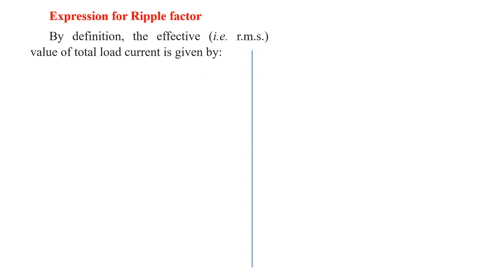We'll derive the expression for ripple factor for both the half wave rectifier and full wave rectifier. By definition, the effective value of total load current — the output current — contains both AC and DC components. The total RMS current is given by: I_rms² = I_dc² + I_ac².